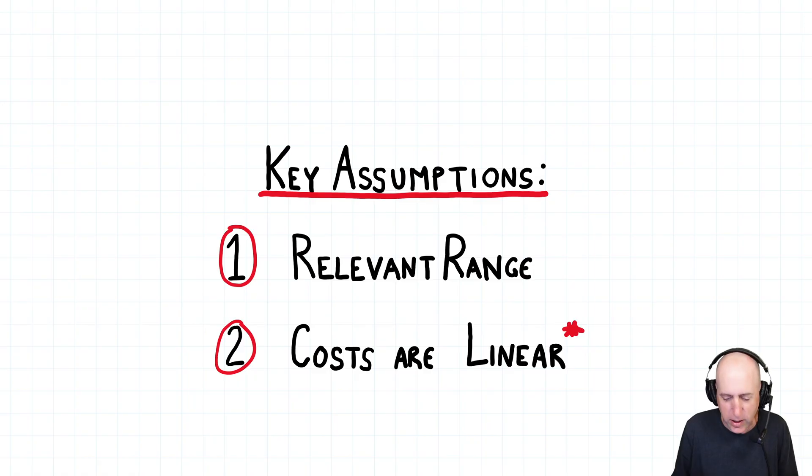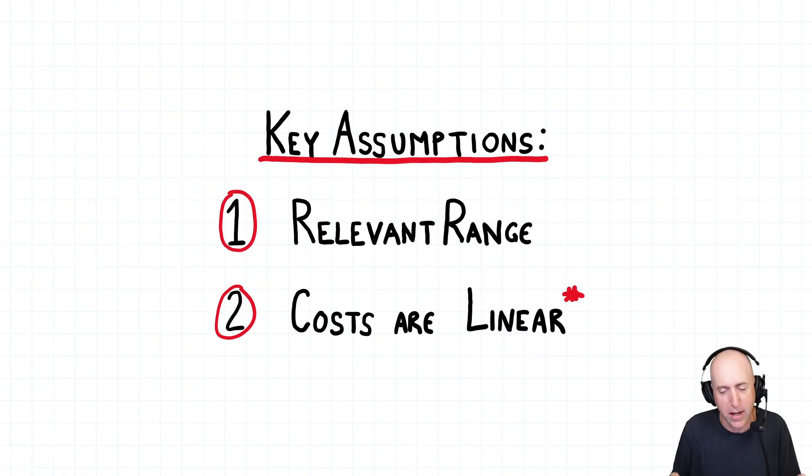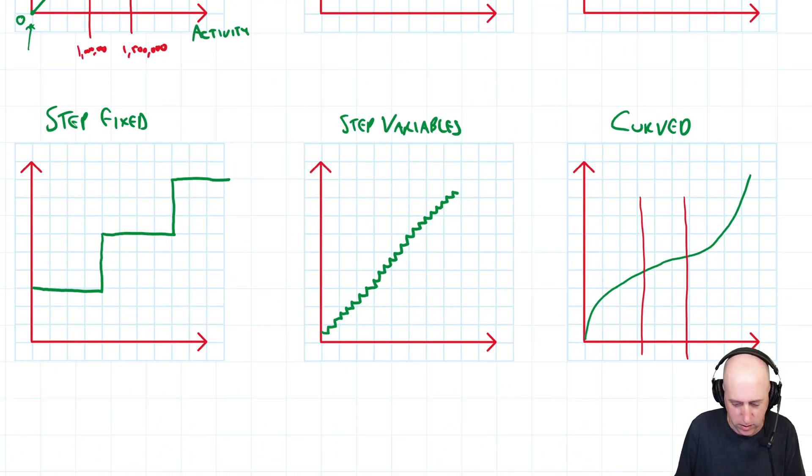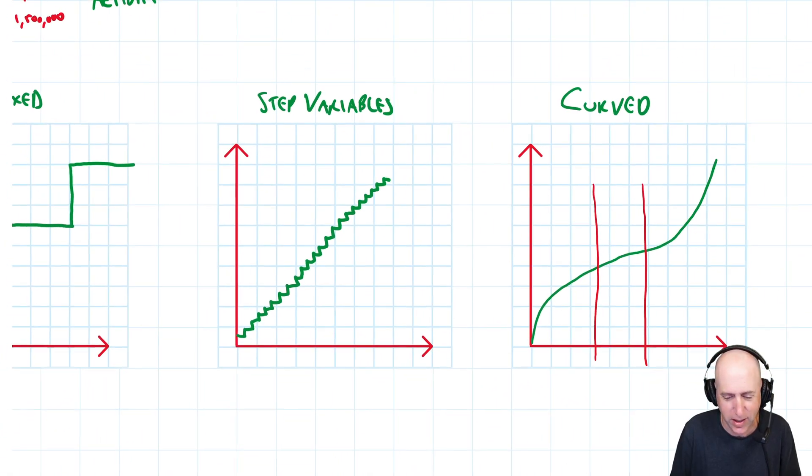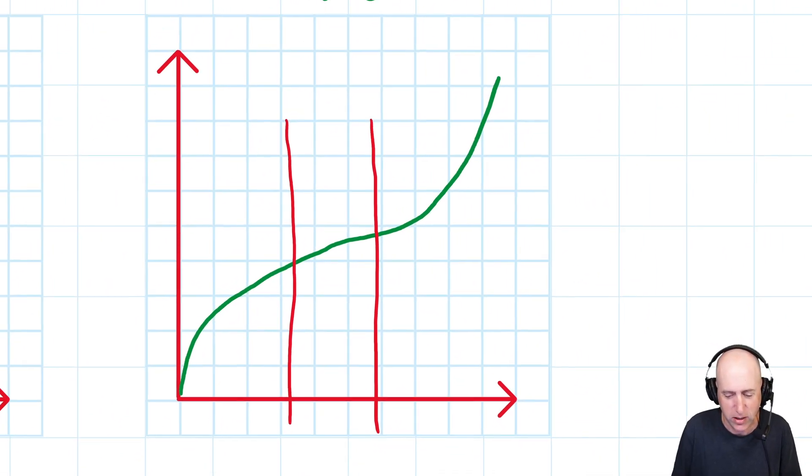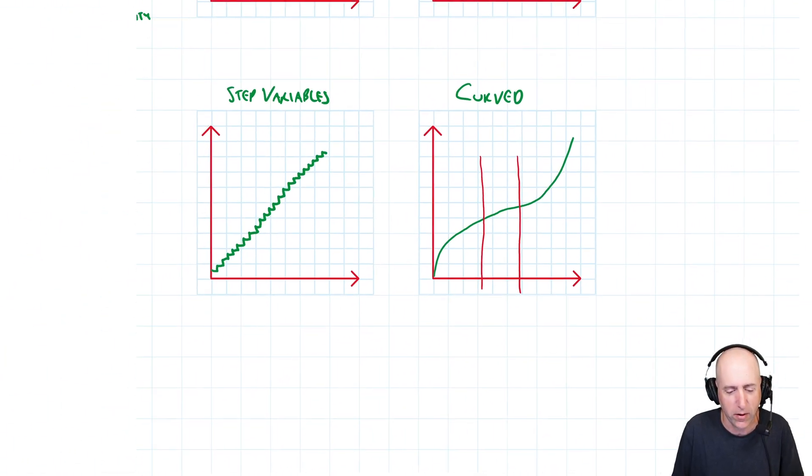The second one is key. This is an assumption and we know it's not a perfect assumption, but it's that costs are linear in the relevant range. What do we mean by costs are linear? It means a straight line would be a good enough way to draw this graph. Drawing a perfectly straight line is good enough. Some costs look like a staircase - that's not a straight line. This cost is clearly curved - that's not a straight line.